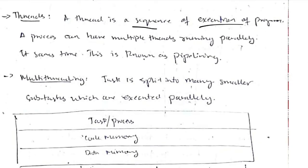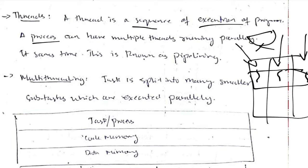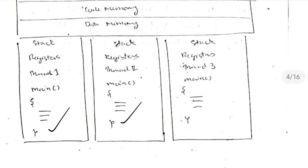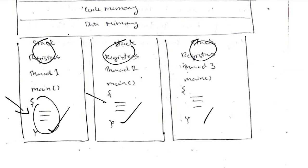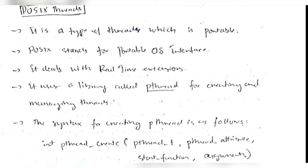A thread is a sequence of execution of a program. The main process will have many threads for simultaneously running tasks. For example, displaying an image involves threads for fetching the image from memory, processing it, and displaying it on screen — all happening simultaneously, known as multi-threading. In multi-threading, the task, process code memory, and data memory are shared between threads, while each thread has its own stack, registers, and code to perform.